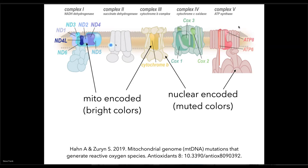In humans, I believe there are only 13 mitochondrial genes. So the mitochondria have their own genome, but a very small number of genes — something on the order of 13 or so. Most of these genes play a role in electron transport; they encode parts of these cytochromes. These cytochromes are big, complicated molecules with many subunits.